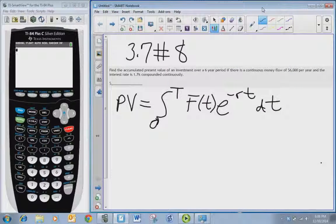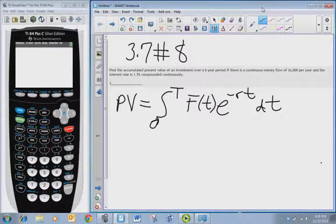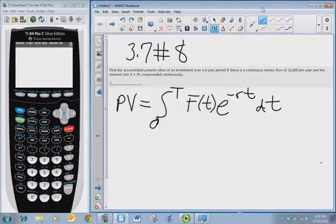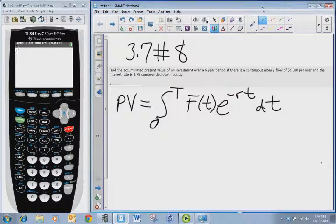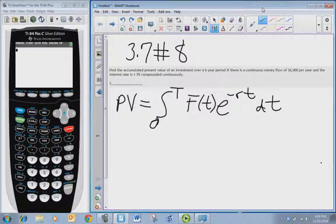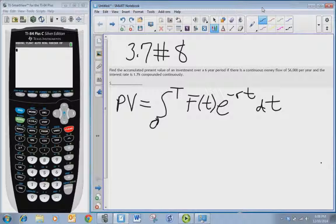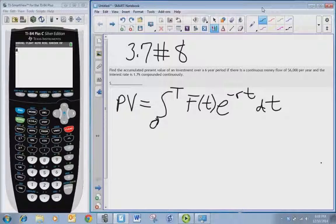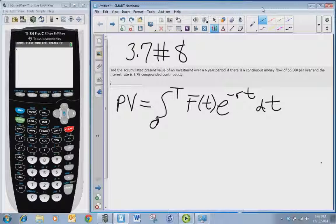All right, we're looking at the problem: find the accumulated present value of an investment over a six-year period if there is a continuous money flow of six thousand dollars per year and the interest rate is 1.7 percent compounded continuously.